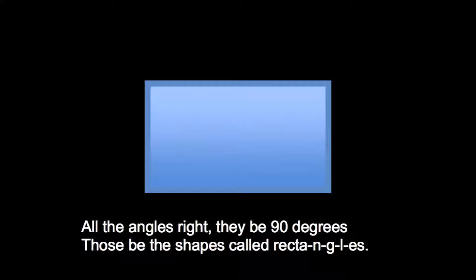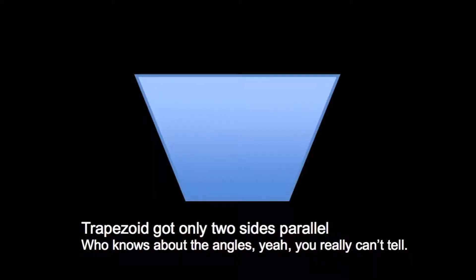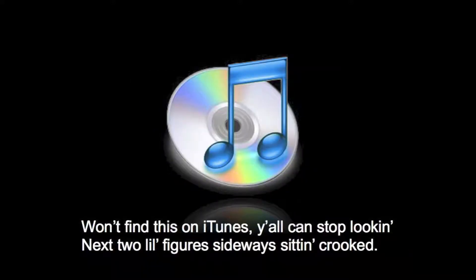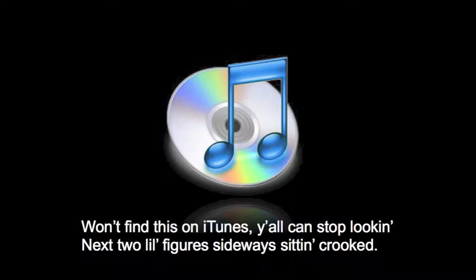Those be the shapes called rectangles. Trapezoids got only two sides parallel. Who knows about the angles that you really can't tell. Won't find us on iTunes, y'all can stop looking. Next to little figures, sideways, sitting crooked.